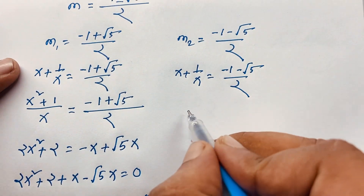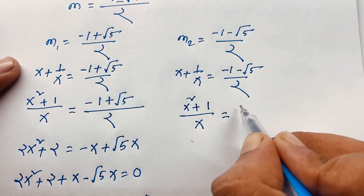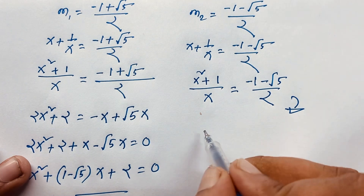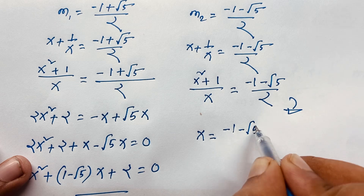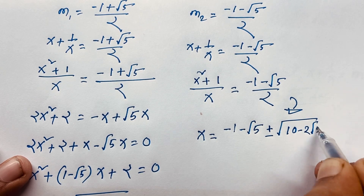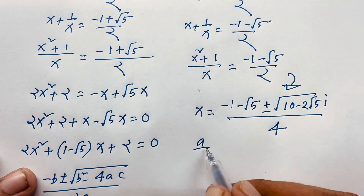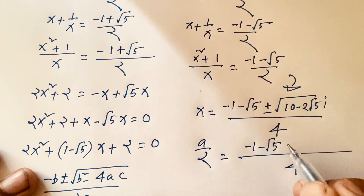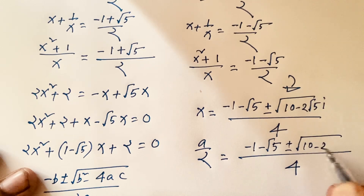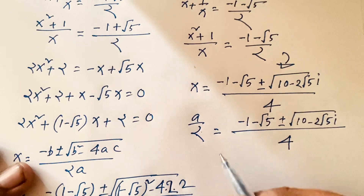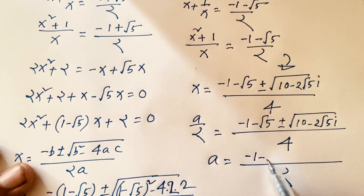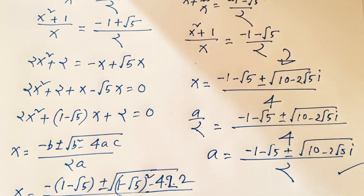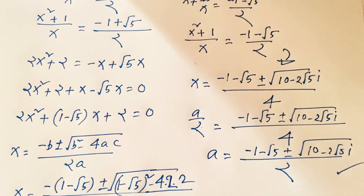For the second case with m₂, we similarly find x² + 1 equals (minus 1 minus √5) over 2 · x, giving a quadratic whose discriminant yields √(10 minus 2√5) · i. So x equals (minus 1 minus √5 plus or minus √(10 minus 2√5) · i) over 4. Then a equals (minus 1 minus √5 plus or minus √(10 minus 2√5) · i) over 2. These are the other two complex roots. So overall we have five roots — one real and four complex. Thank you all; if you enjoy this video please subscribe to my channel for other interesting videos. Goodbye, take care.